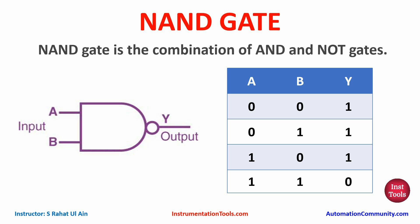For the NAND logic gate, output Y turns on when all the inputs are false or any one of the inputs is false. So let's move to CoDeSys where we will draw the ladder diagram of NOR and NAND gates and also simulate them.